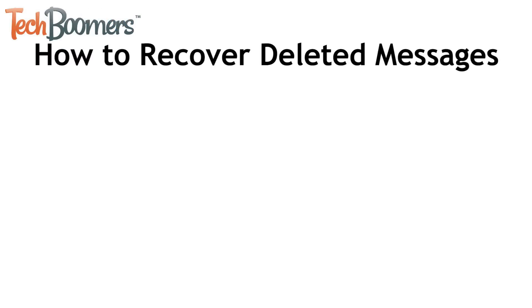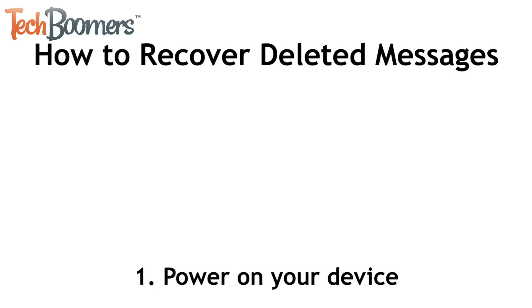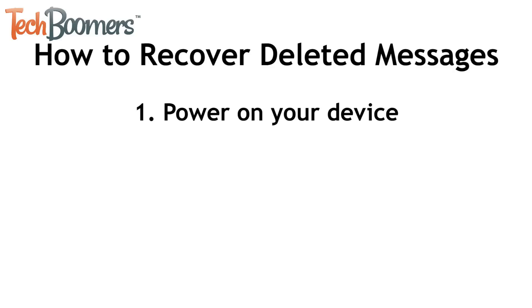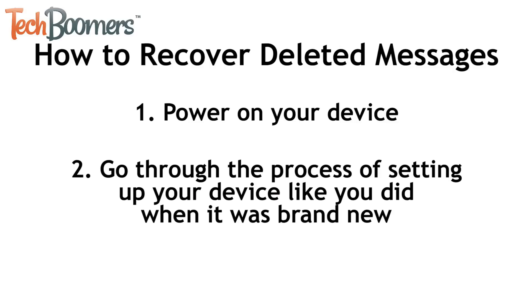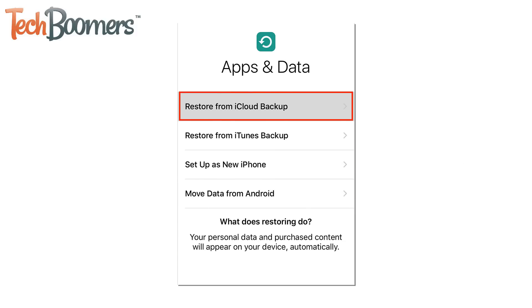Now let's get into the steps for recovering deleted text messages on your iPhone. To begin, power on your device. Then go through the process of setting up your device like you did when it was brand new. When you see Apps and Data at the top of your screen, select Restore from iCloud Backup or Restore from iTunes Backup, depending on where you saved your data.